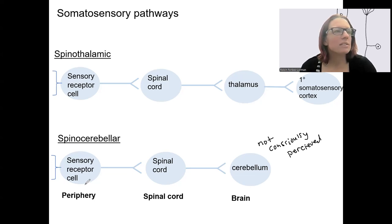This information is not going through the thalamus. Thalamus tends to lead to a primary cortex. Instead, we're just going to sensory receptor cell, spinal cord, cerebellum.